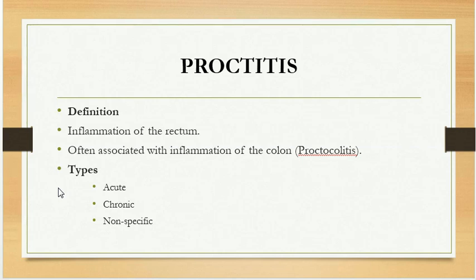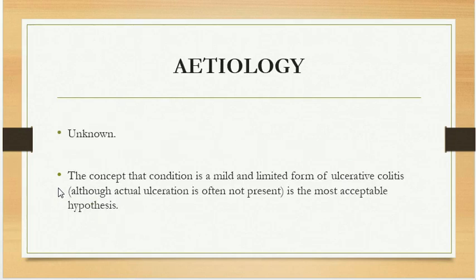There are different types of proctitis: it may be acute proctitis, chronic proctitis, or non-specific proctitis. As far as the etiology is concerned, it is unknown. The most acceptable hypothesis is that the condition is a mild and limited form of ulcerative colitis, although in this case actual ulceration is often not present.